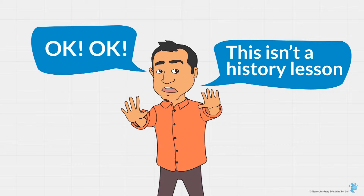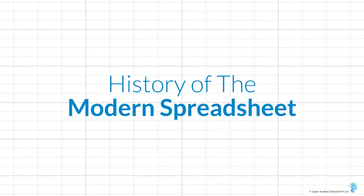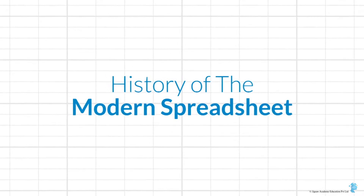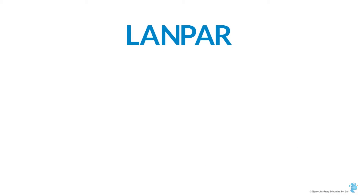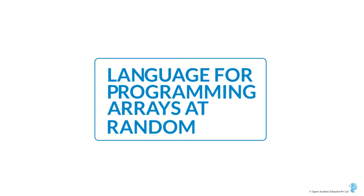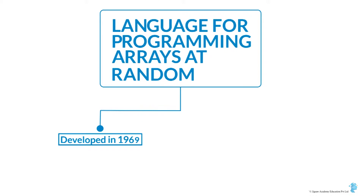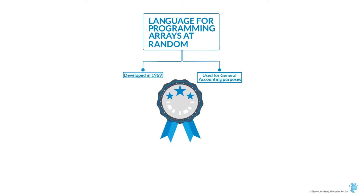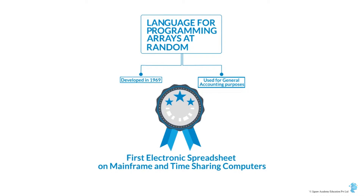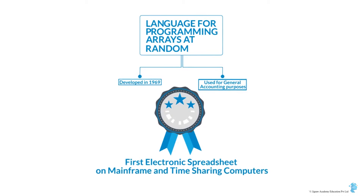The history of the modern electronic spreadsheet can be traced back to a few developments over the last 60 to 70 years. The first of them was LANPAR, which stood for the Language for Programming Arrays at Random. It was developed in 1969 and used for general accounting purposes, and is credited with being the first electronic spreadsheet on mainframe and time-sharing computers.